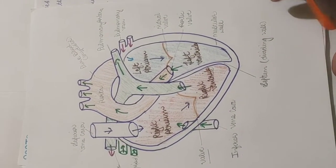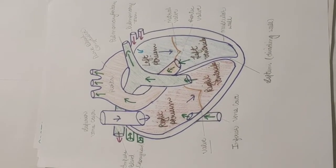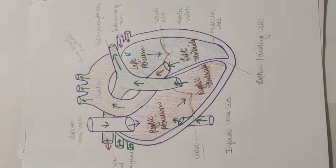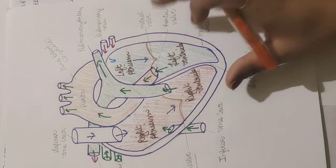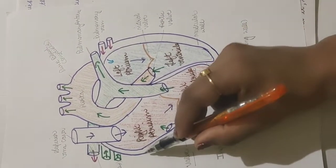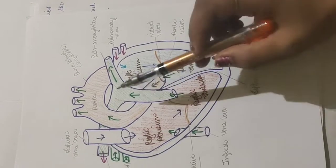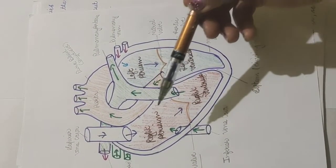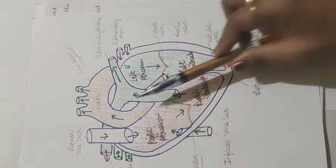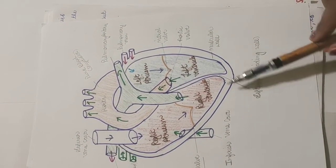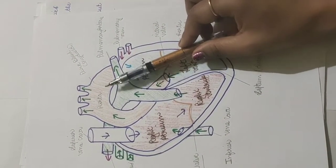The diagram of the heart shows the outer muscular wall, which is tilted towards the left. In the middle, the heart is divided into four chambers. The portion dividing the heart into left and right sides is called the septum — it is a dividing wall, so the two sides do not mix. This is the right atrium, right ventricle, left atrium, and left ventricle.